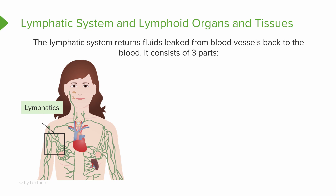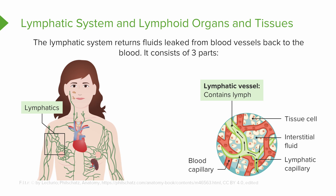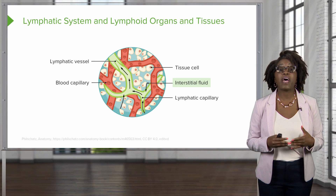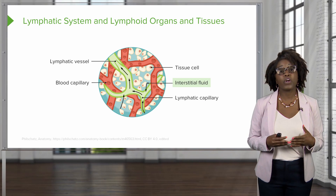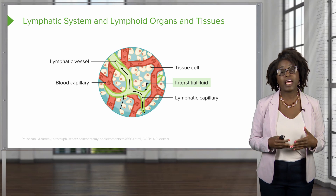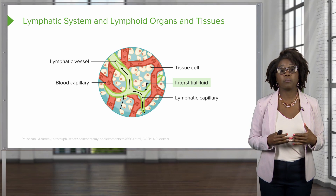You have a network of lymphatic vessels referred to as the lymphatics, the fluid inside those vessels referred to as the lymph, and finally we have the lymph nodes which are going to serve to clean that fluid. The lymphatic system is going to return interstitial fluid and leaked plasma proteins back to the blood.